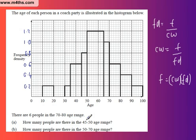So, how many people are there in the 45 to 50 age range? Well, this is the one just here, isn't it? So, the class width, CW, is equal to 5. The FD now is 0.8, the frequency density is 0.8. So, what do we want? We want the frequency. So, frequency, remember, is class width multiplied by frequency density. 5 times by 0.8 is 4. So, there are 4 people. That accounts for 4 people.